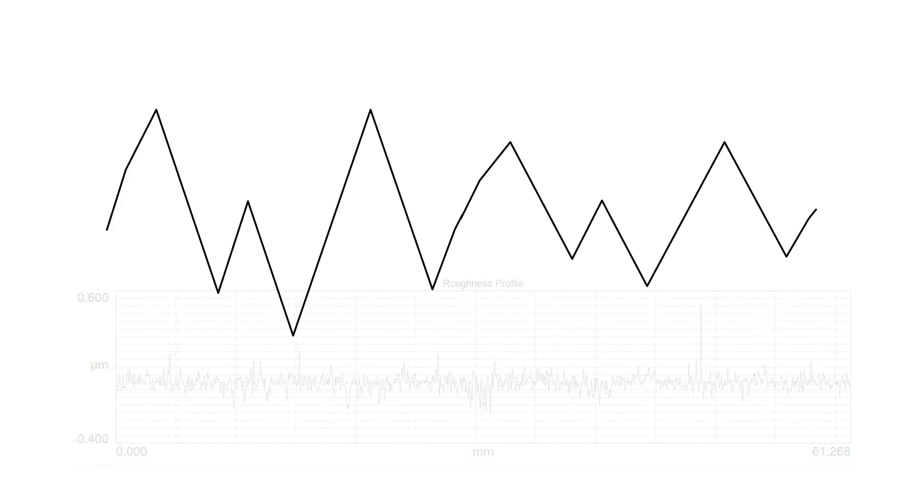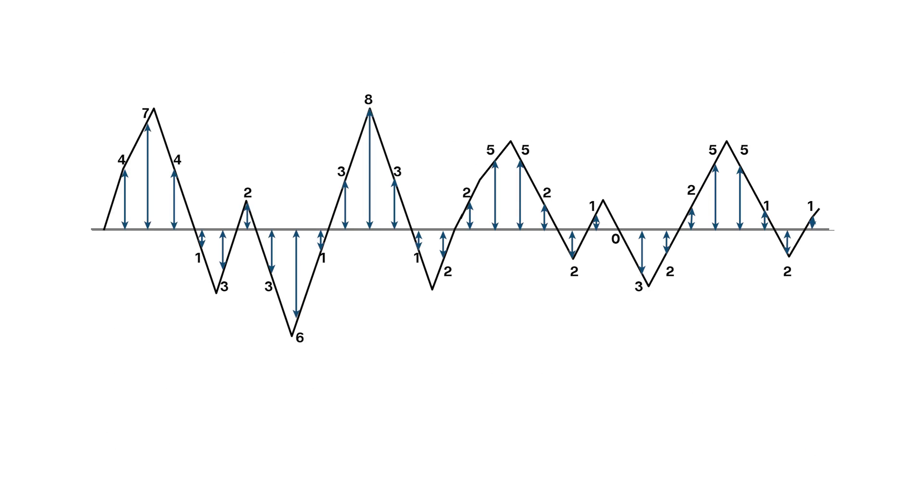To calculate RA, we find the best fit mean line, add up the absolute distance from the mean line to each point, and divide by the total number of measured points.